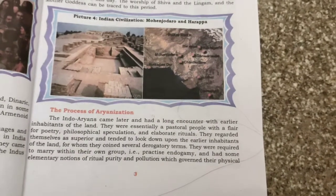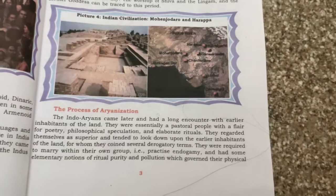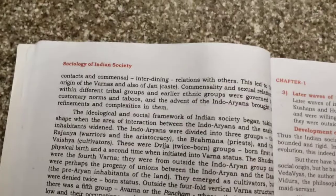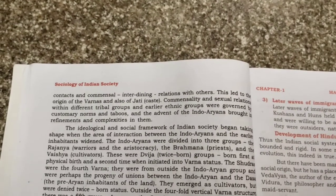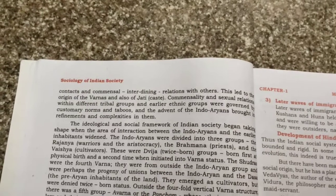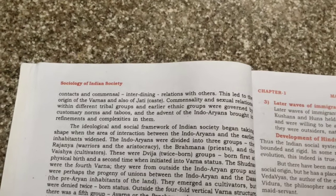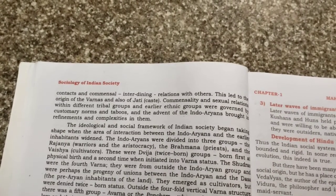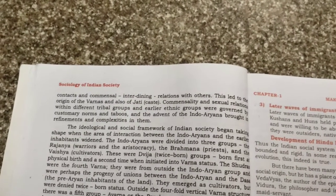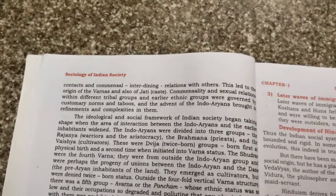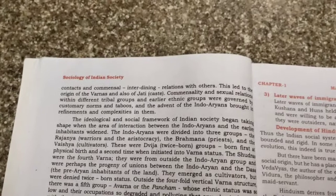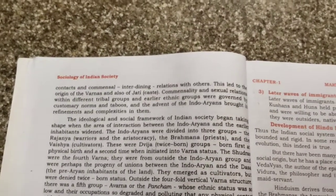Endogamy means you marry within the group, within the tribal group or clan. Elementary notions of ritual purity and pollution governed their physical contact. You were not supposed to go out of your group and marry — that would be seen as polluting the group. Commensal and inter-dining relations with others led to the origin of Varnas and also Jati or caste. Sexual relations within different tribal groups were governed by customary norms and taboos, and the advent of the Indo-Aryans brought refinements and complications.